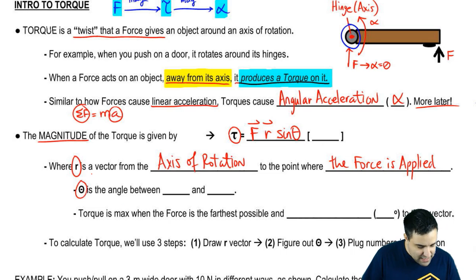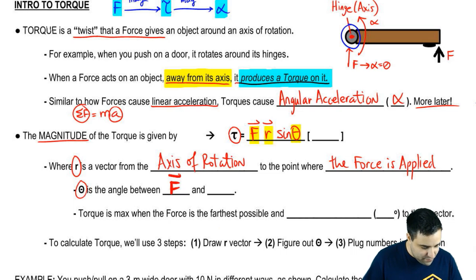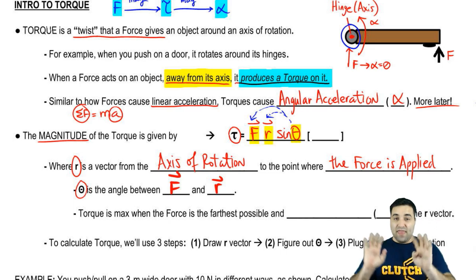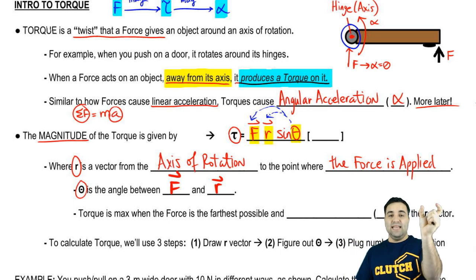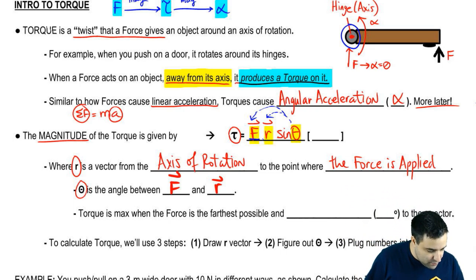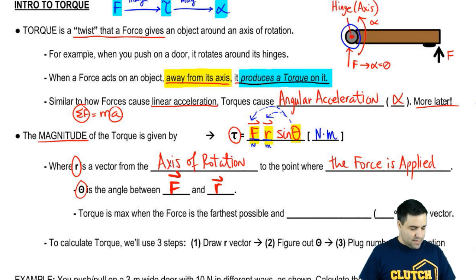Theta is the angle between the two vectors F and R. A helpful reminder: in the equation FR sine theta, the theta is the angle between the F and the R — the two quantities adjacent to theta. The unit for force is Newtons, and the unit for distance R is meters, so torque is measured in Newton meters.